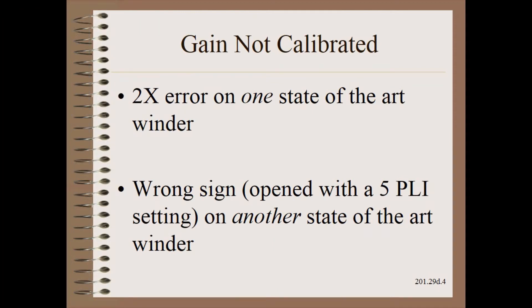The first two case histories are with brand new state-of-the-art computer control winders by a century-old builder with far more sophistication than most other builders have. The first case was a rider roll on a two-drum winder that had a divide-by-two error in the PLC math. The second case was a reel secondary arm that opened up with a 5-PLI setting.